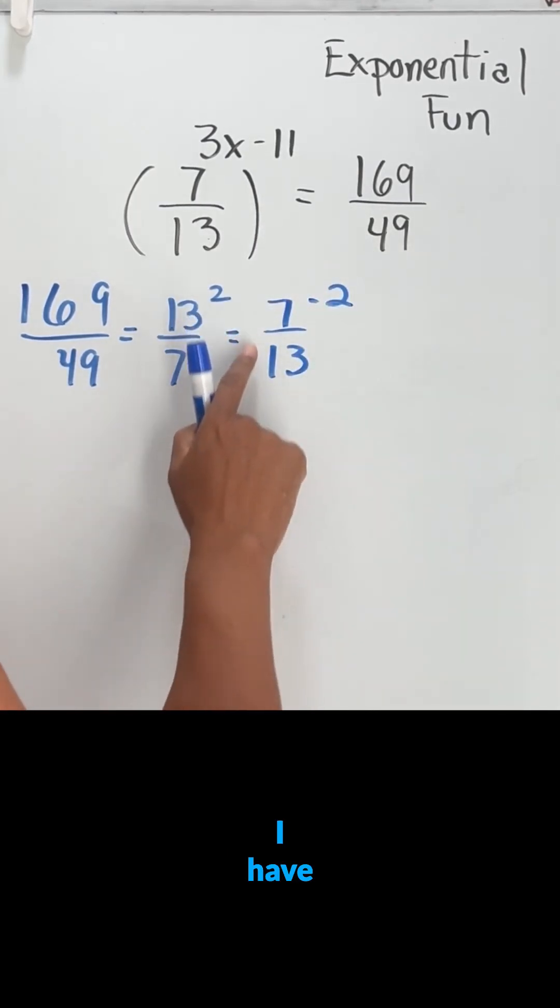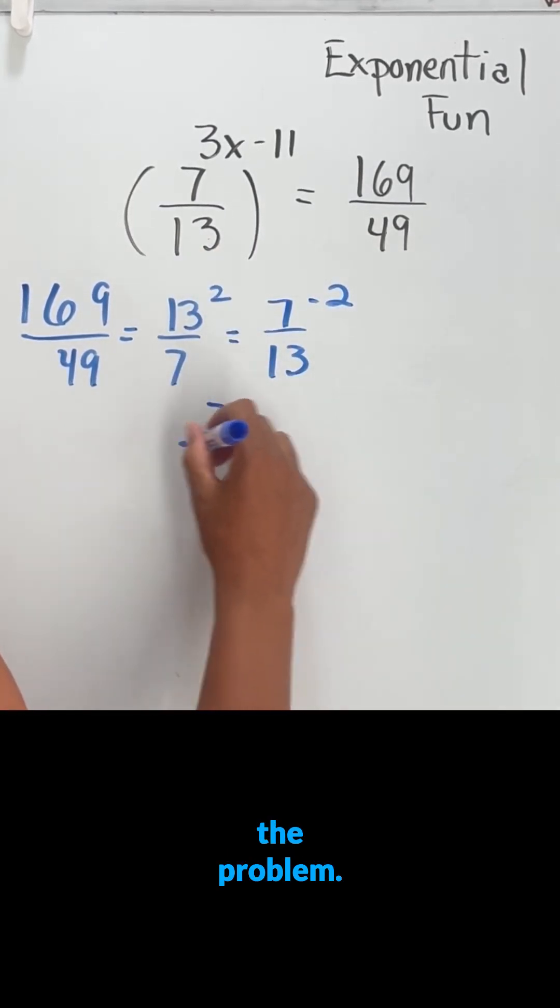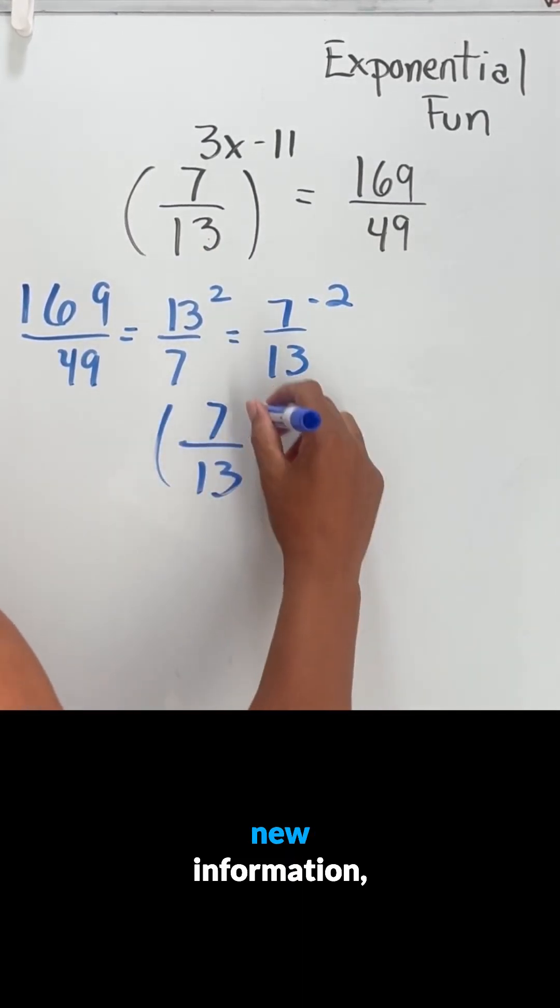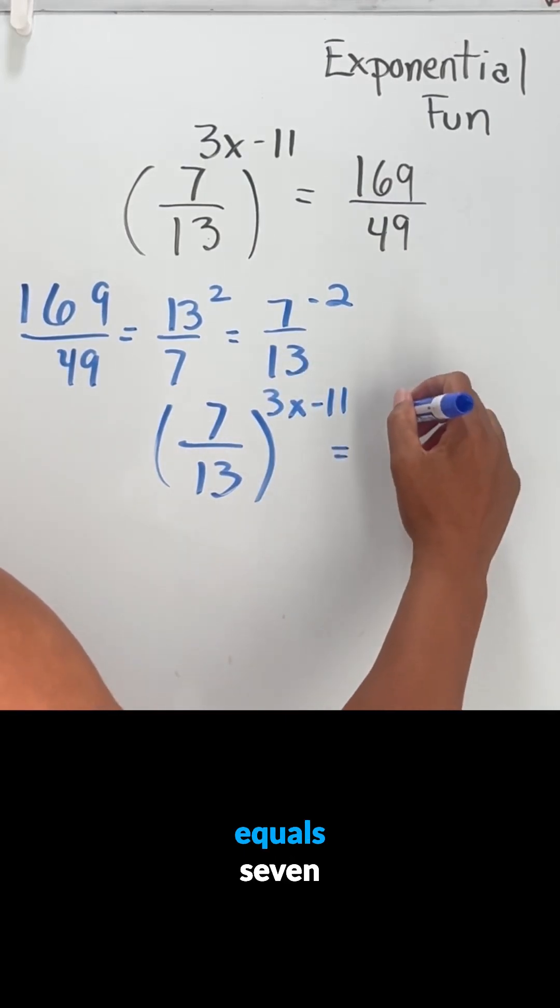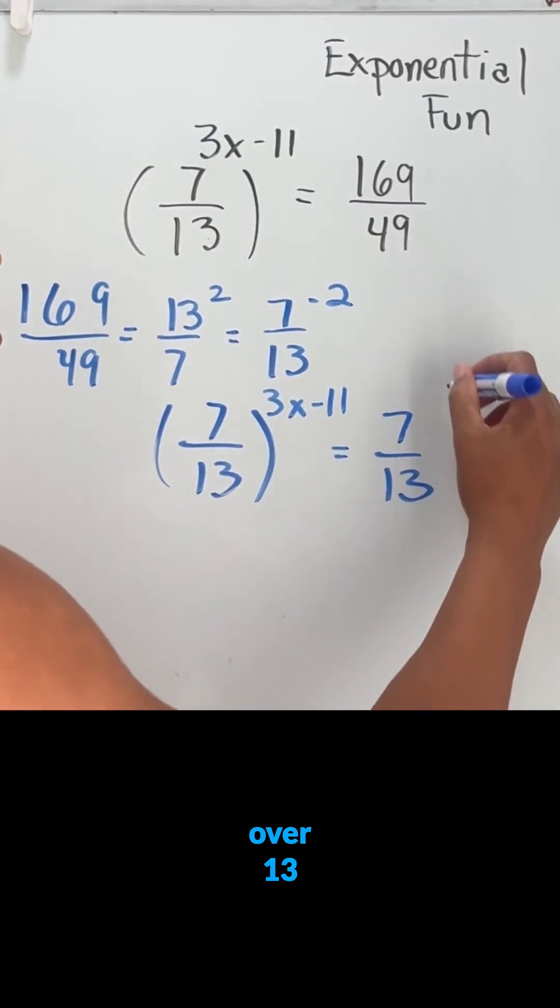So now I have the same base. So let me rewrite the problem with my new information: 7 over 13 to the 3x minus 11 equals 7 over 13 to the negative 2.